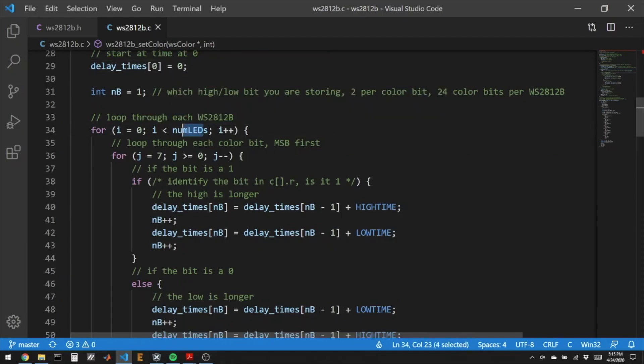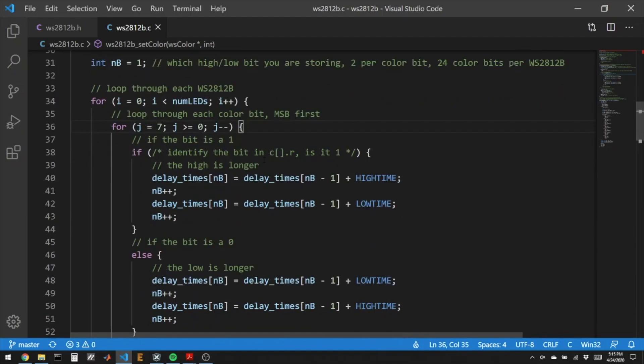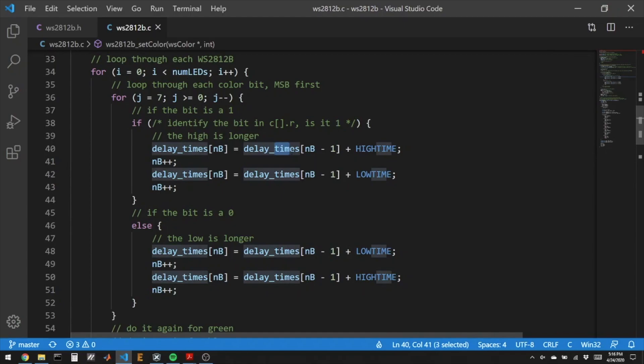We'll start it at 0, and then we'll loop through every single LED that we have and every single bit that's in the three colors. The most significant bit comes out first. So we'll take the 8-bit number, say c[0].r is the amount of red, and we'll shift the bits over so we get the most significant bit. If it's a 1, we're going to take the previous time, the first was 0, and we're going to add this amount of time, that's how long the pin is going to be high, and then we'll add this amount of time, that's how long the pin will be low. But if the bit was a 0, we'll do the opposite. We'll wait a shorter amount of time with the pin high and a longer amount of time with the pin low.